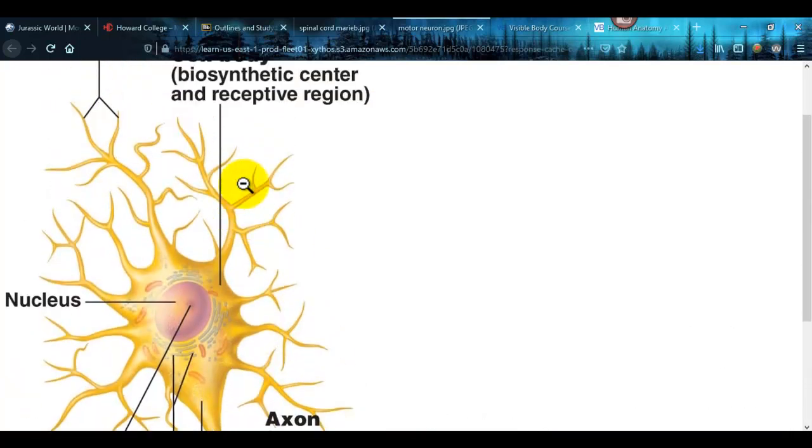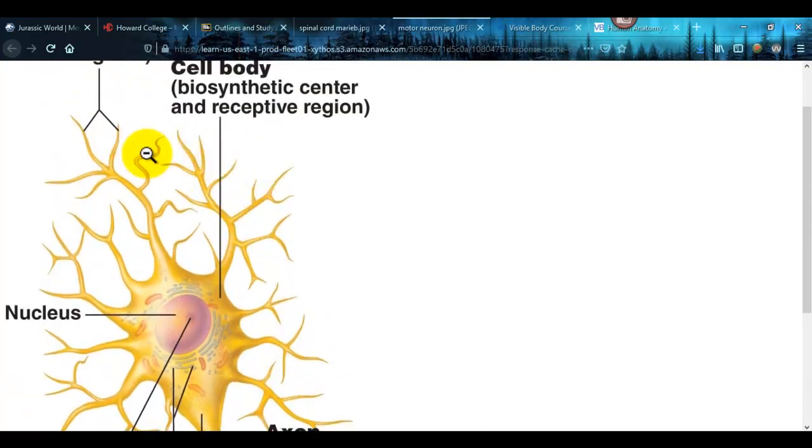These little extensions coming off are called dendrites. That's how a nerve can connect to another nerve or the end of another neuron.